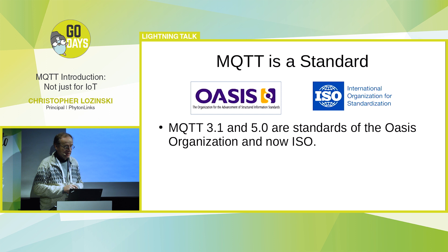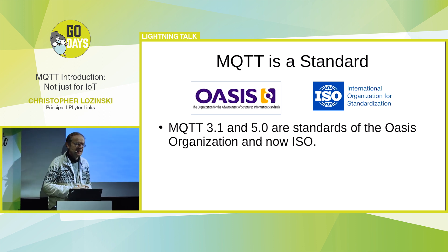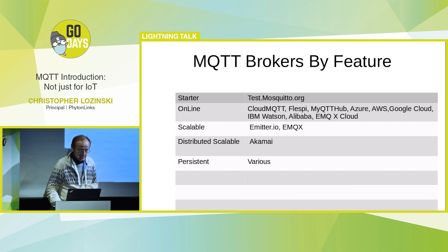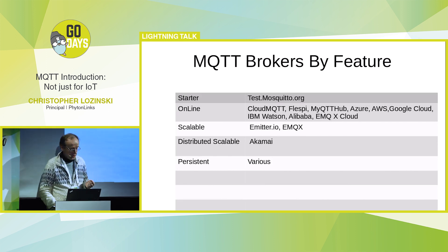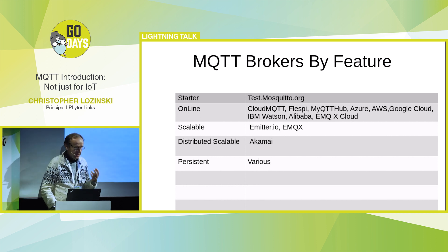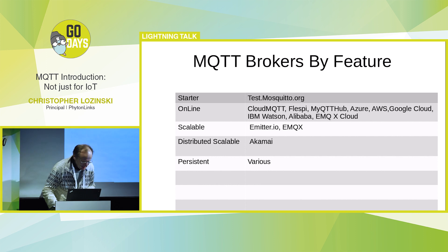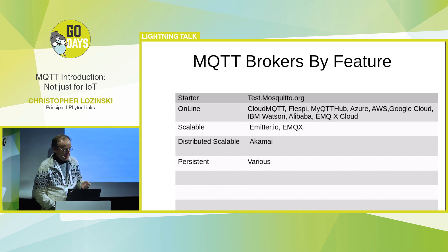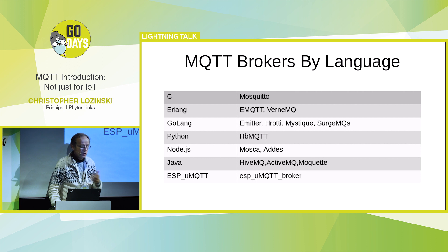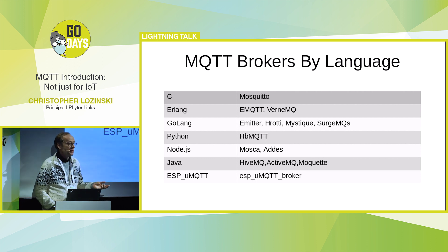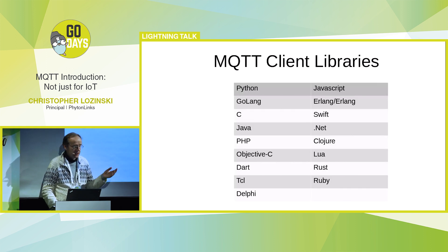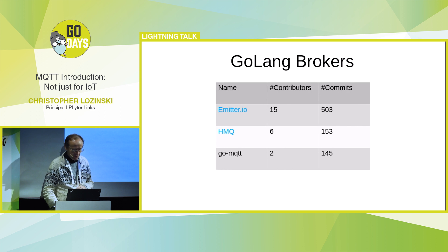MQTT is a standard — it's ISO-compliant and also standardized by OASIS. The reason that's so important is that it means there are a lot of brokers. A lot of people start with a free one like test.mosquitto.org. All the major hosting companies have them, there are some scalable brokers, and Akamai has a very interesting distributed broker. You can also choose the broker based on whatever language you want. There are client libraries that run on every single platform imaginable.